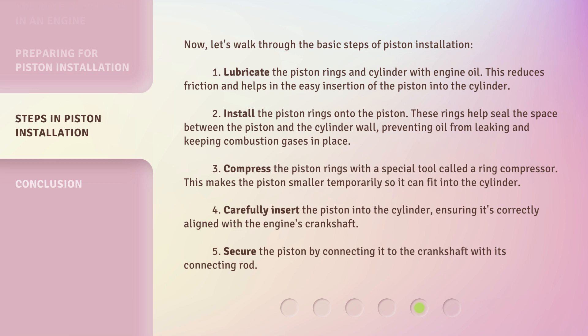Step 3: Compress the piston rings with a special tool called a ring compressor. This makes the piston smaller temporarily so it can fit into the cylinder. Step 4: Carefully insert the piston into the cylinder, ensuring it's correctly aligned with the engine's crankshaft. Step 5: Secure the piston by connecting it to the crankshaft with its connecting rod.